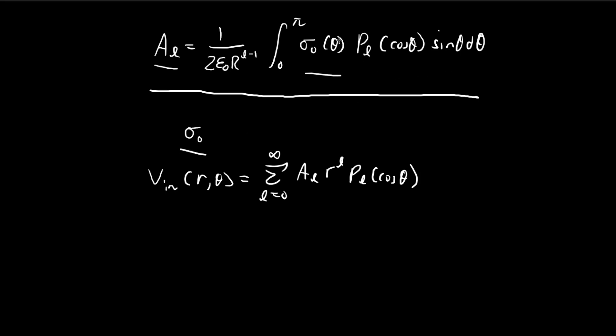So now we're given that this function is a constant. So what is a_l going to be? Once we've found this, we'll have essentially found the potential inside of the sphere. So let's try to evaluate a_l.